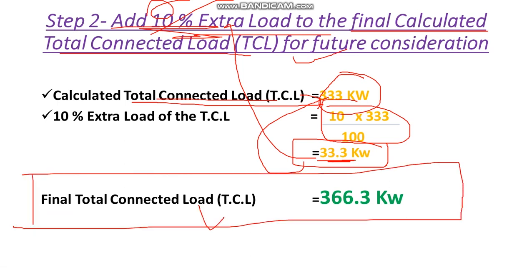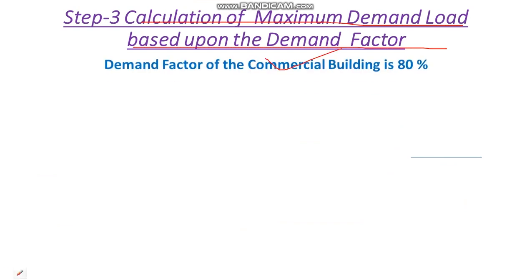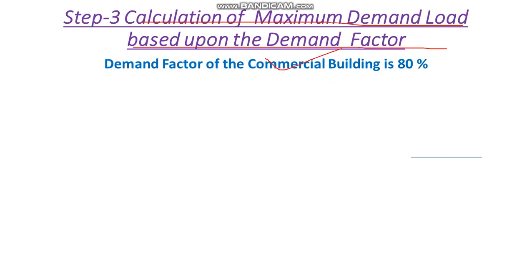In Step 3 we have to calculate the maximum demand load based upon the demand factor. For a commercial building the demand factor is 80%, meaning the load is generally 80% on at maximum and 20% off — we will not switch on all loads at the same time.